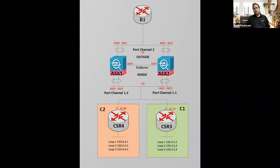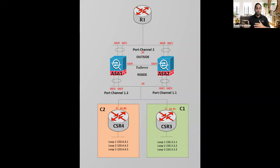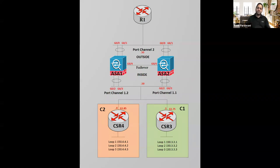A physical ASA by default is running in single mode, which means it's just one physical box and that's what you can configure it for. If you want to create virtual firewalls, the first thing you need to do is change the mode from single mode to multiple mode, which supports virtual firewalls. That's the first thing you need to do.